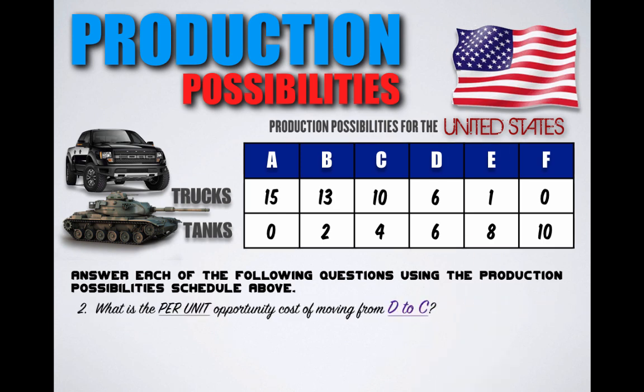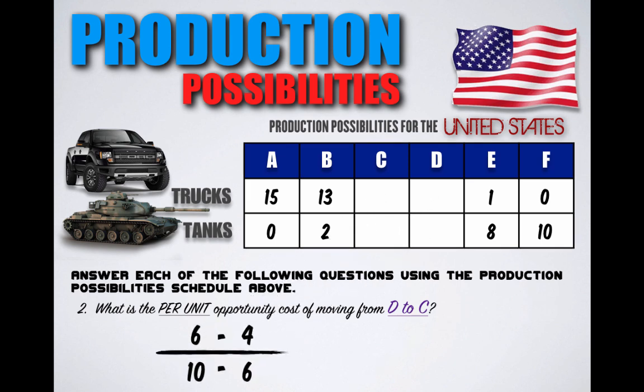Question number two: what is the per unit opportunity cost of moving from combination D to combination C? Remember, we're looking at units given up compared to units gained. In this case, the United States may be moving out of war and more towards a post-war economy, shifting scarce resources away from military goods and towards consumer goods. When shifting from combination D to C, the United States is decreasing its tank production from six units to four units and is able to reallocate those resources to produce four more trucks. So the per unit opportunity cost is half a tank per truck.